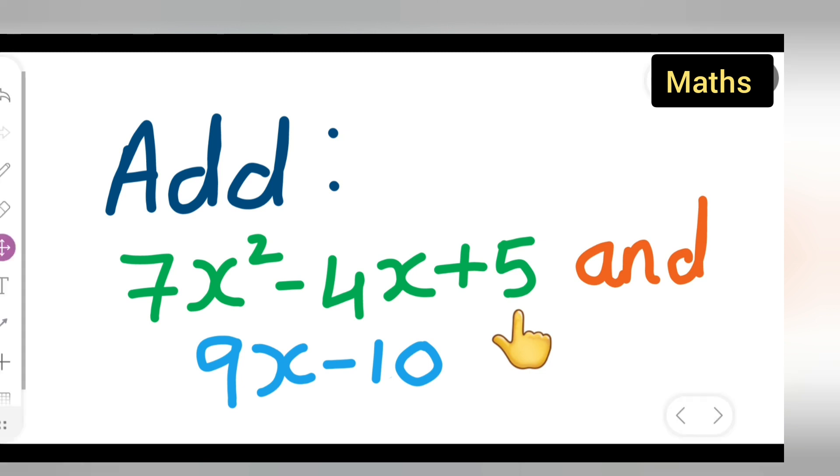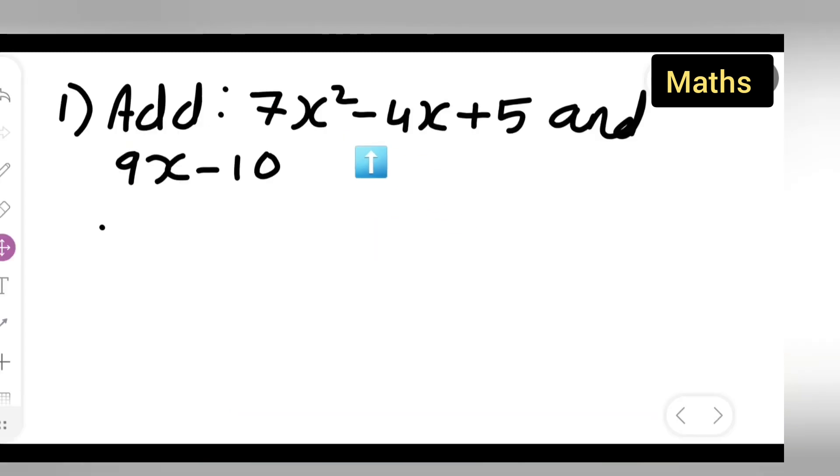We need to add these two variables. First, you can take down the question: 7x square minus 4x plus 5 and 9x minus 10. Let us add these given numbers. First, I will write down this number: 7x square minus 4x plus 5.